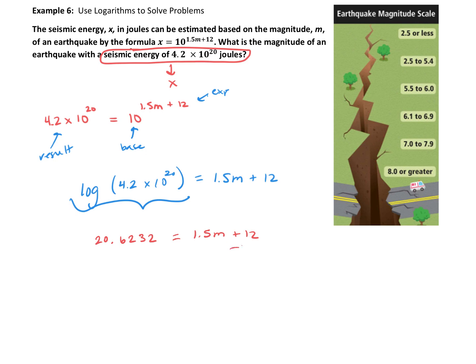And now we're just solving for M. We're going to subtract 12 from both sides. That's going to give us 8.6232.